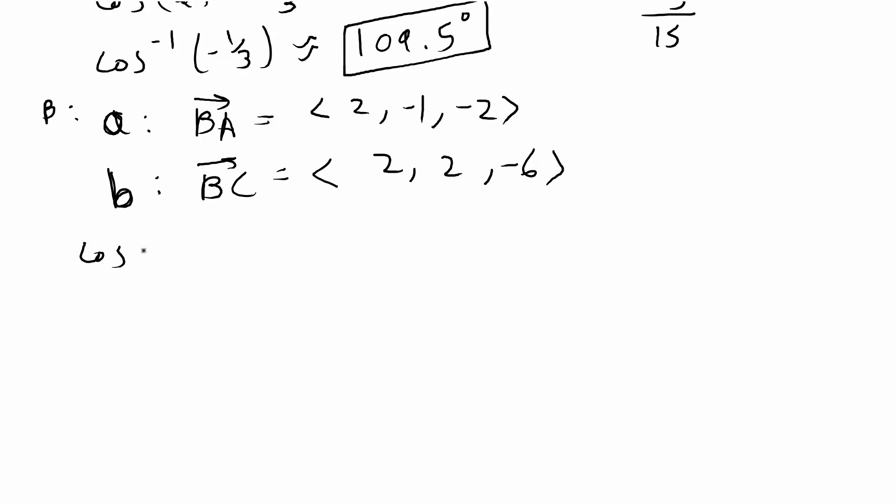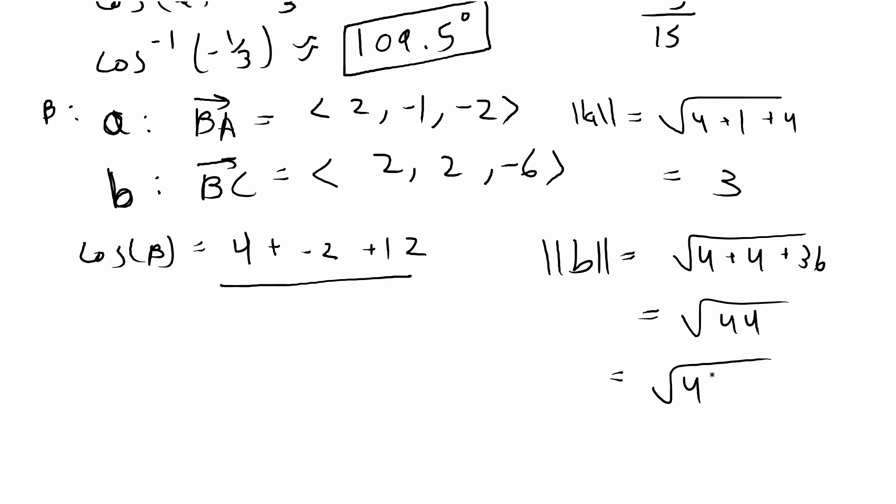We have the formula cosine beta is equal to the dot product, which is going to be 2 times 2 is 4 plus 2 times -1 is -2 plus 12 over the magnitudes. So this is going to be the square root of 4 + 1 + 4, which is 3. And then this one is the square root of 4 + 4 + 36, which gives you the square root of 44. If we simplify this, that's 4 times 11, which gives you 2 times the square root of 11.